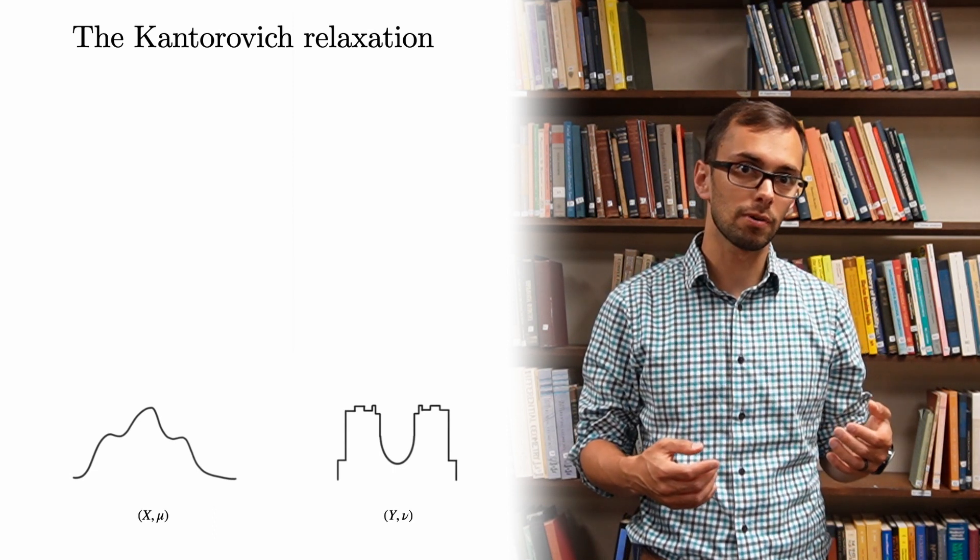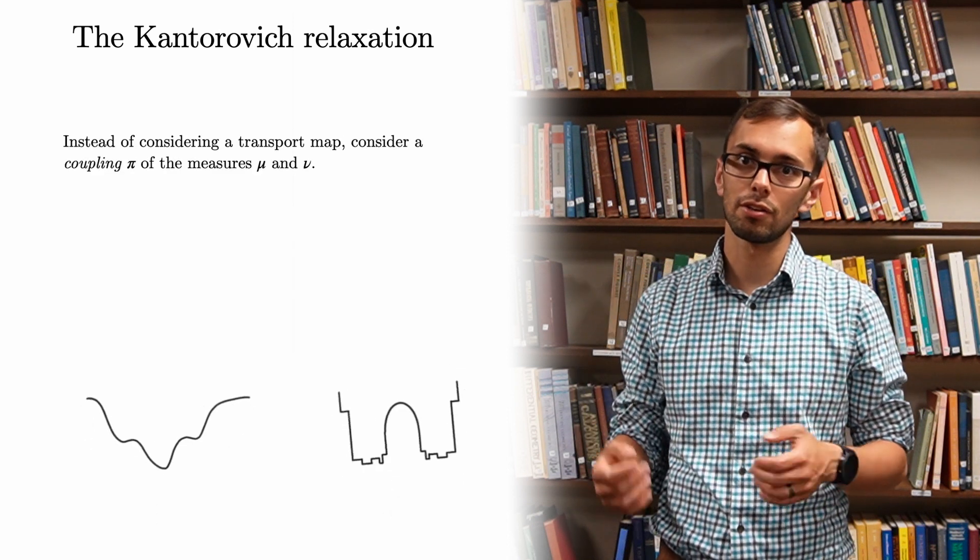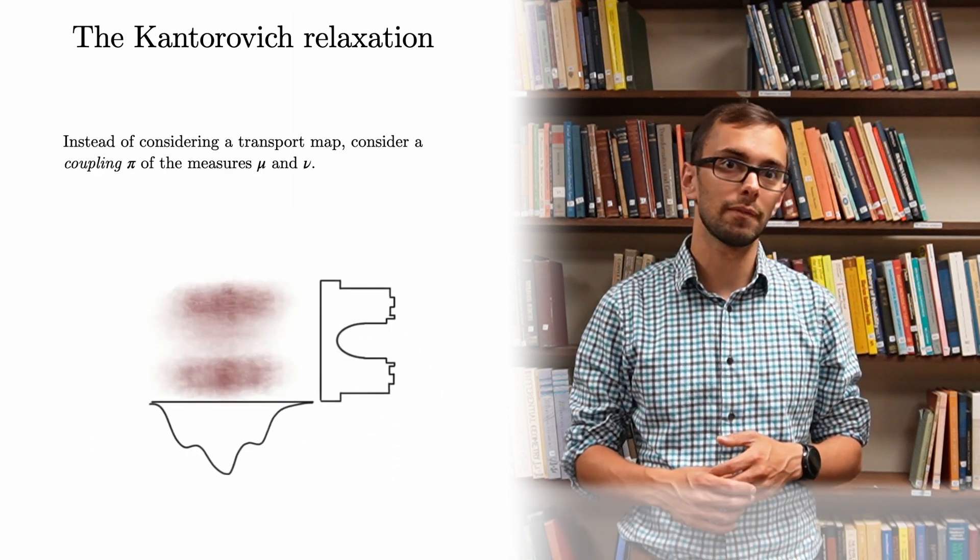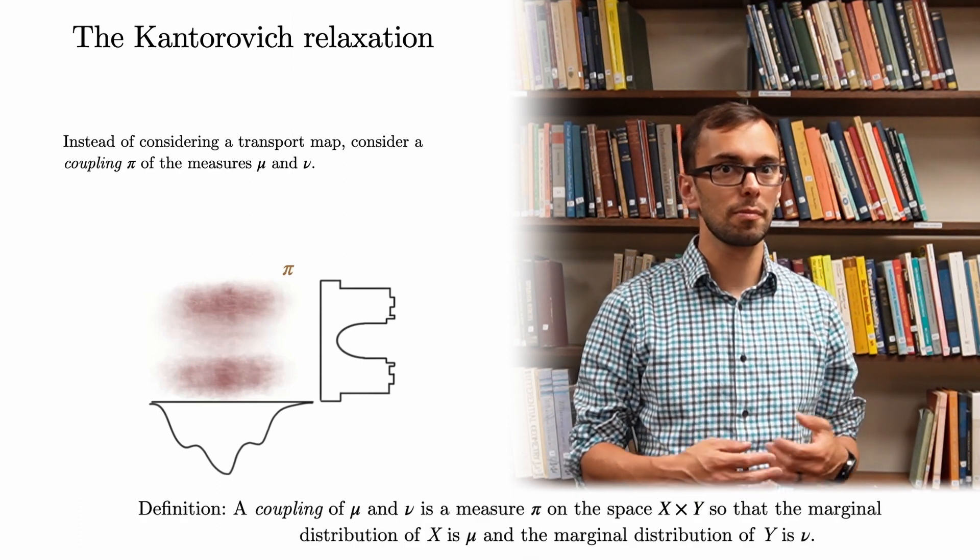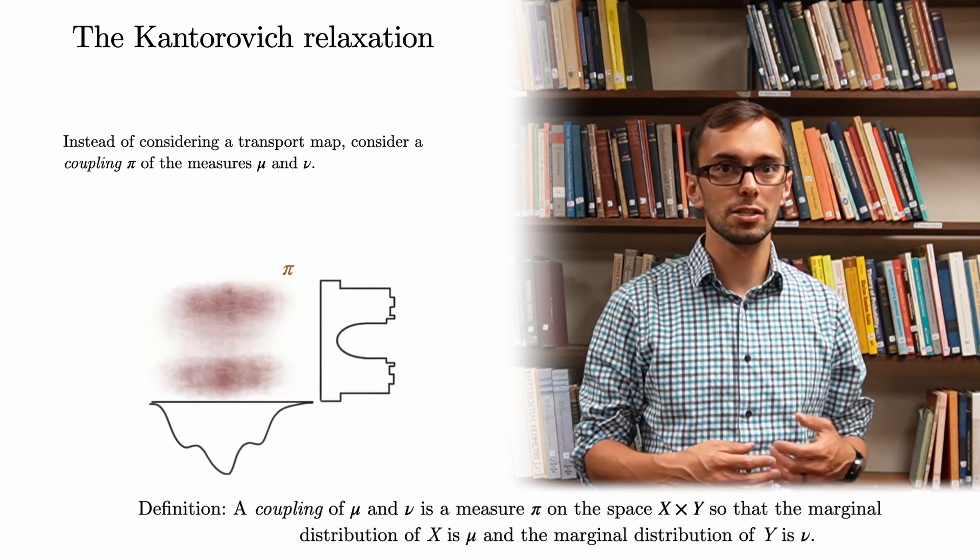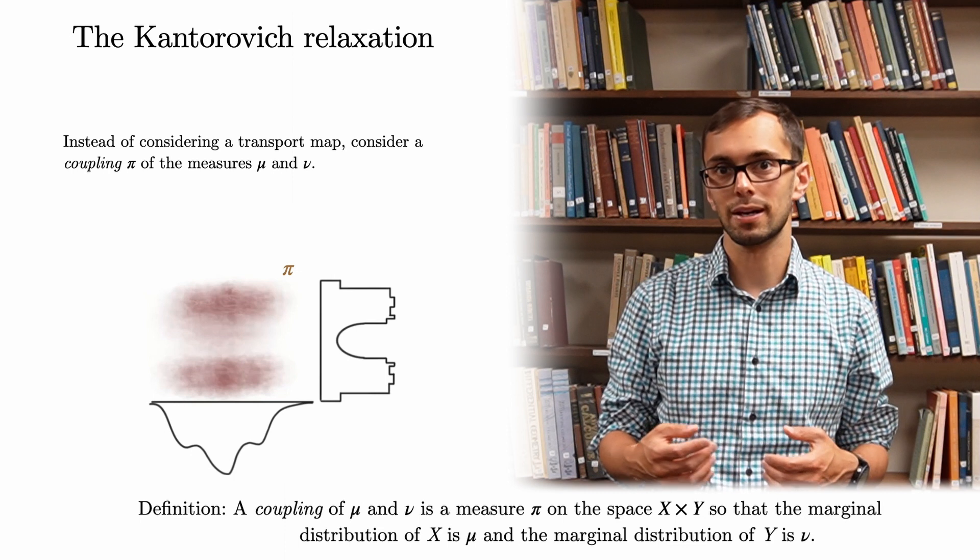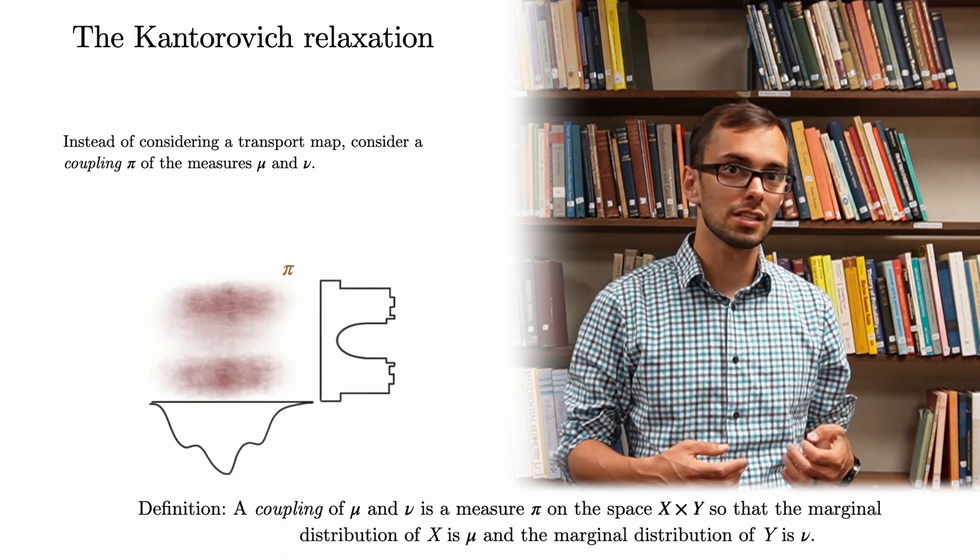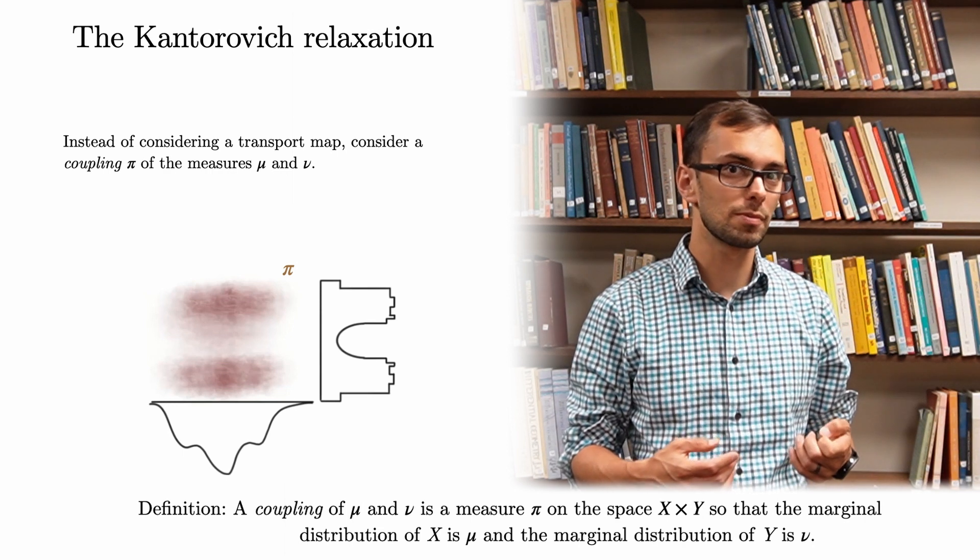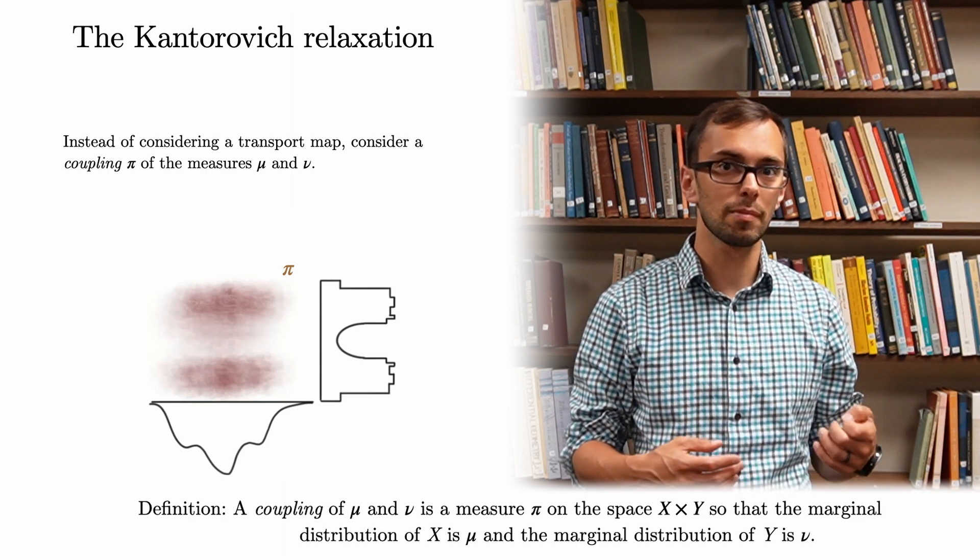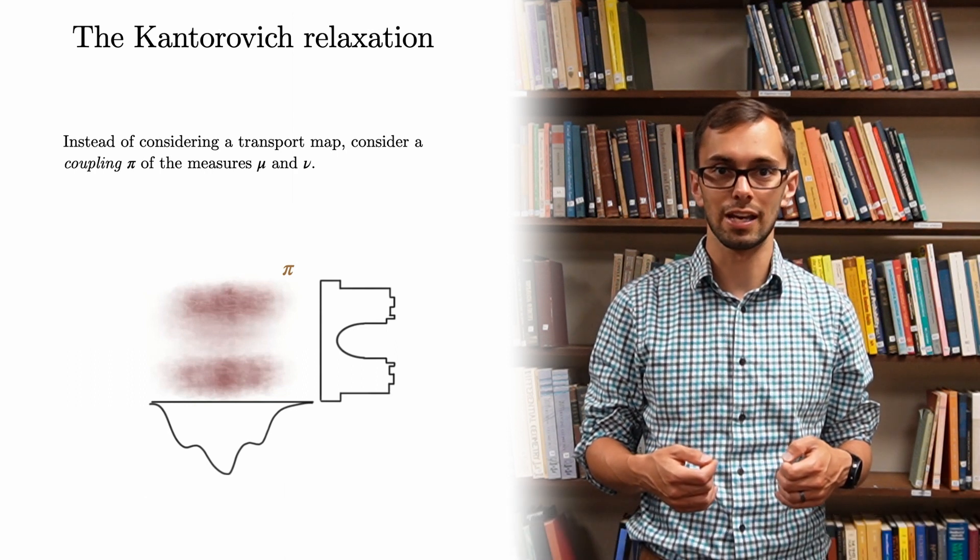To encode a transport, we consider a coupling of the measures mu and nu, which we denote by pi. I should tell you what a coupling is. A coupling of two probability measures, mu and nu, is a measure on the product space, so that the marginal distributions are mu and nu, respectively. In other words, if we integrate pi with respect to y, so what remains is a distribution on x, the resulting measure is mu, and similarly for nu, when we integrate with respect to x.